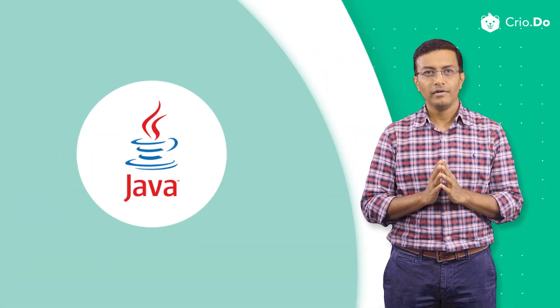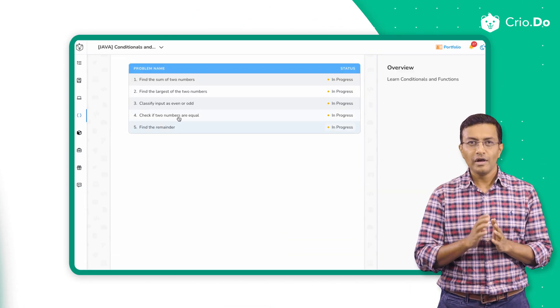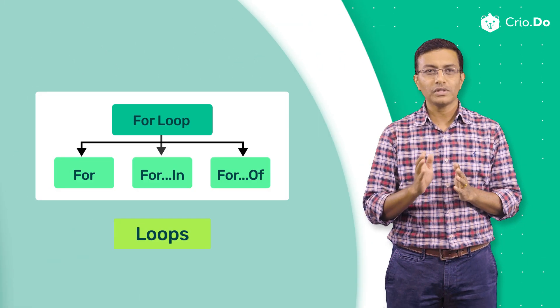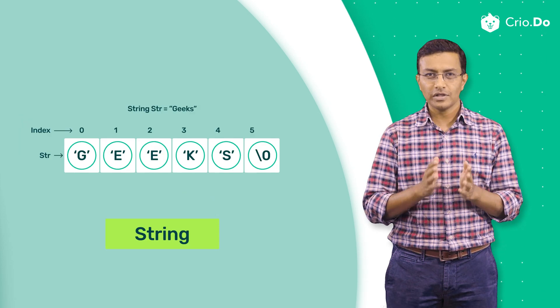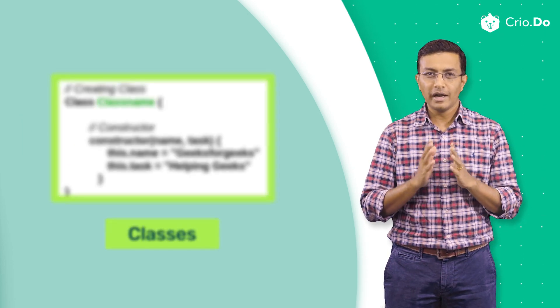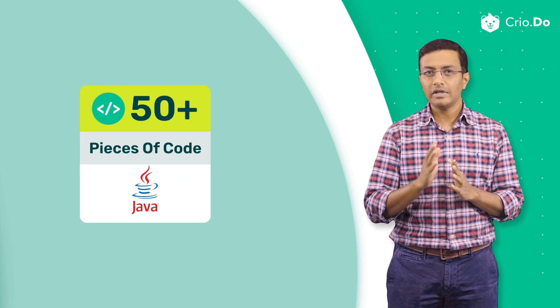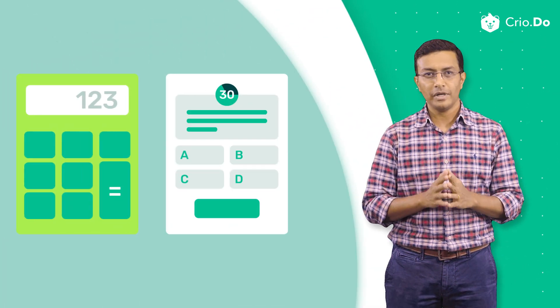If you are new to programming, you will start learning Java from scratch. The way you will learn is by writing small pieces of code for each concept like loops, arrays, strings, classes, and other Java features. You will be writing over 50 pieces of code to become comfortable with Java syntax, and then work on a couple of mini projects in Java like calculator and quiz applications.